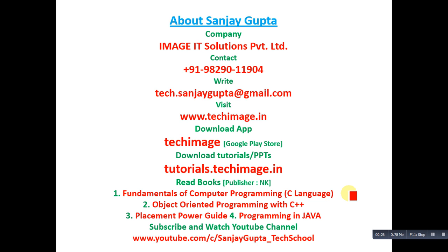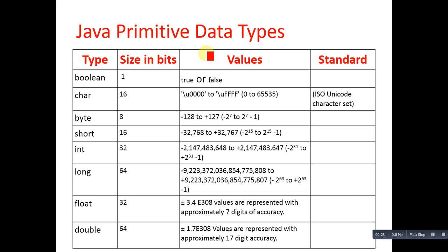Now coming to the data types, there are several primitive data types available in Java. Primitive means predefined. In the first column, types are available, then size in bits, then values, and then standard.